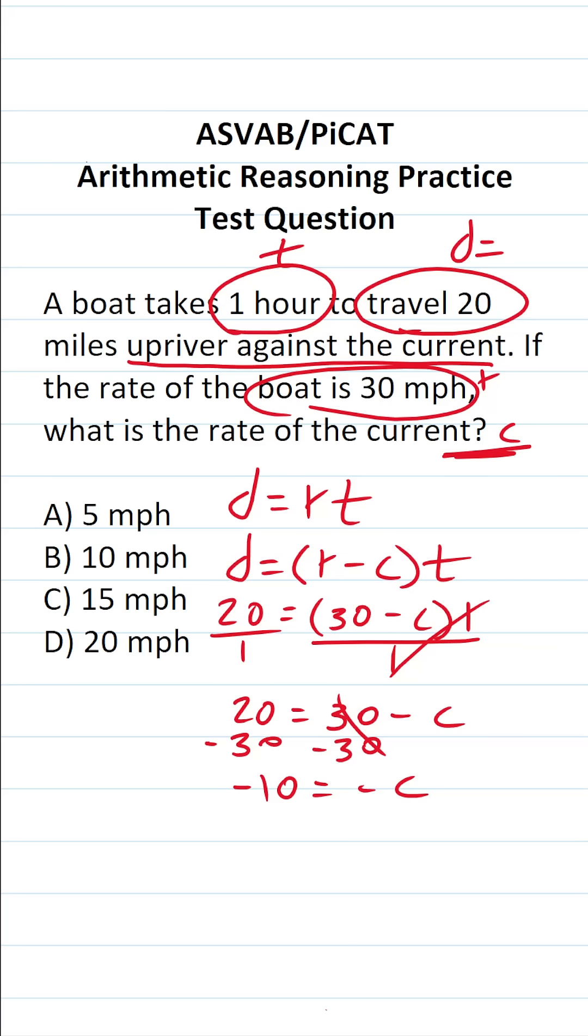So to clear this negative in front of this C, we're going to divide both sides of the equation by negative 1. Negative divided by a negative becomes a positive, so this becomes C. Negative 10 divided by negative 1 is going to be positive 10. So the rate of the current is B, 10 miles per hour.